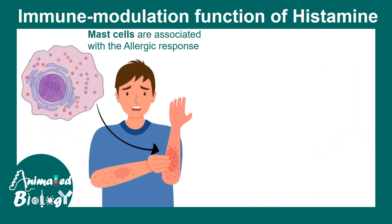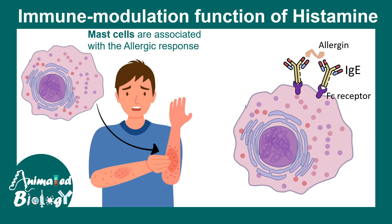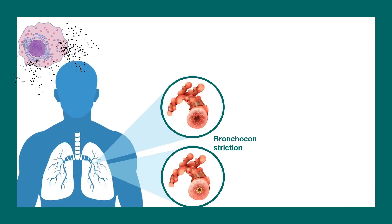Mast cells are closely associated with allergic responses, and the key mediator of this is the Fc receptor. The Fc receptor binds to IgE antibodies, and allergens can cross-link these IgE antibodies, putting the mast cell in a sensitized state. Once sensitized, the mast cell is more prone to degranulate and secrete histamine upon subsequent allergen exposure.